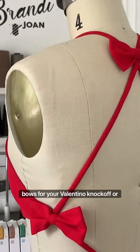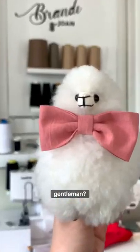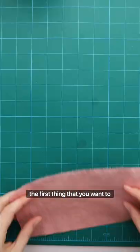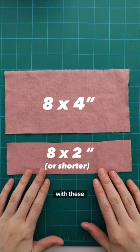Want to learn how to make fabric bows for your Valentino knockoff or for a little gentleman? The first thing that you want to do is cut rectangles of fabric with these measurements.